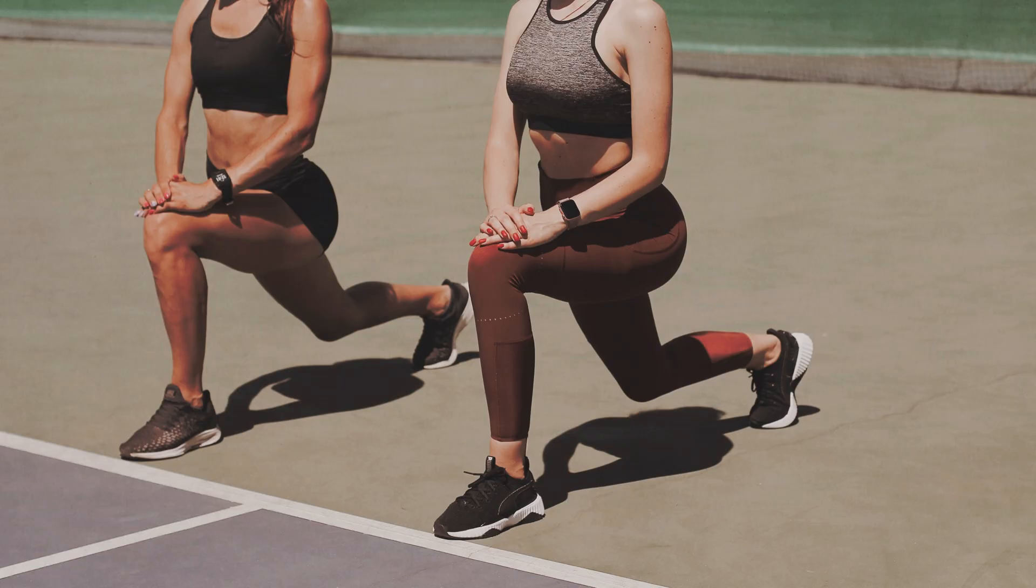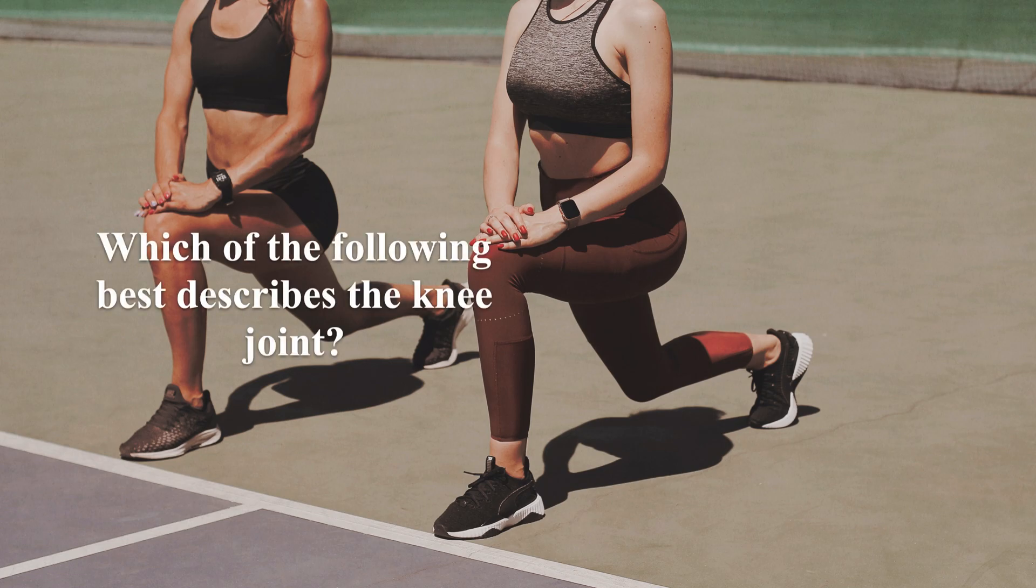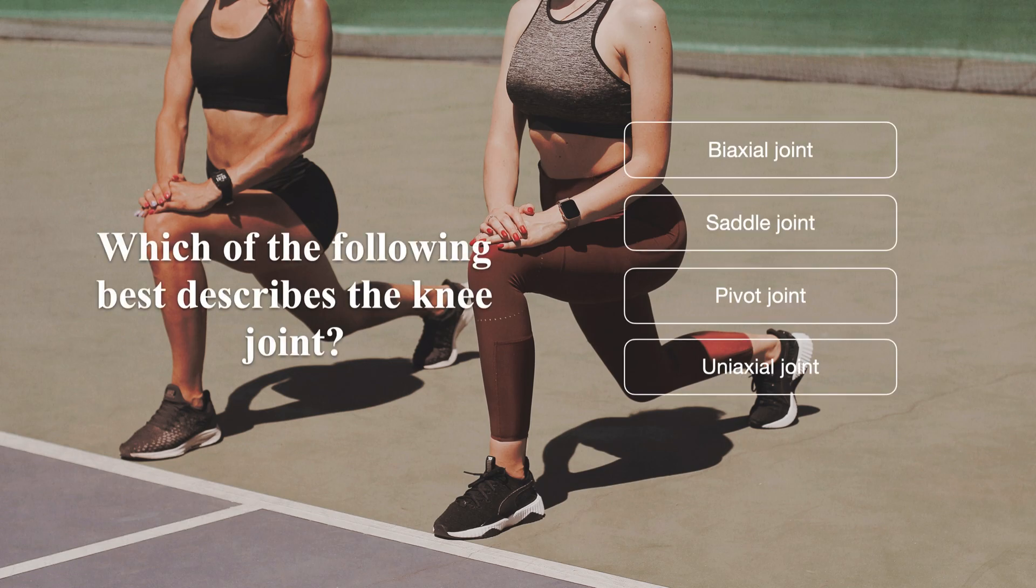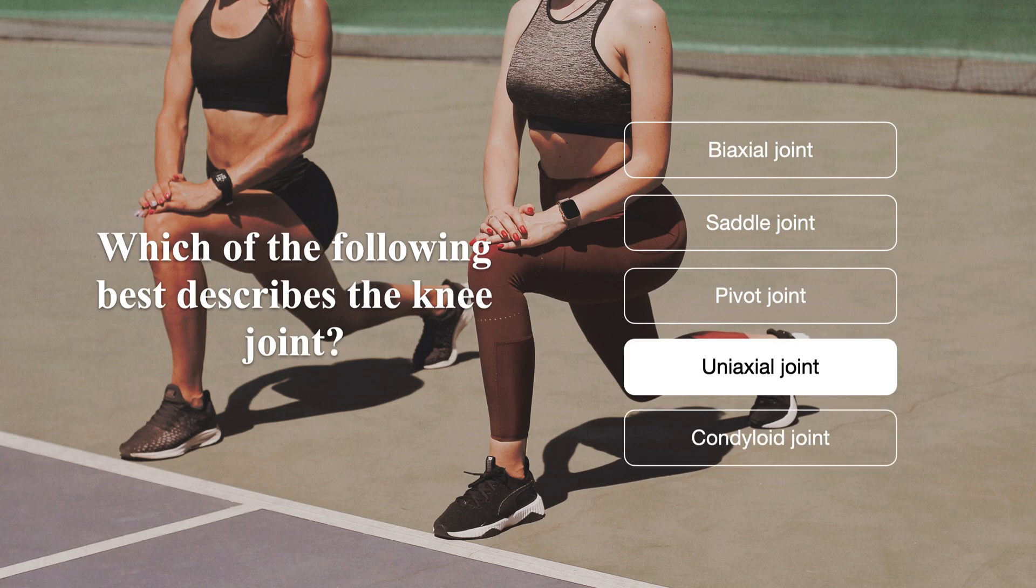Factoring all that has been covered in the video, which of the following best describes the knee joint? A biaxial joint? A saddle joint? A pivot joint? A uniaxial joint? Or a condyloid joint? The correct answer is a uniaxial joint, as it's a hinged joint that permits movement in one axis. It allows for flexion and extension.